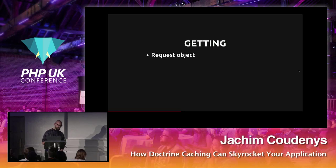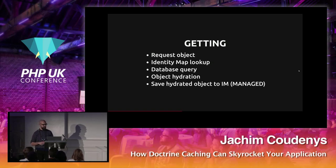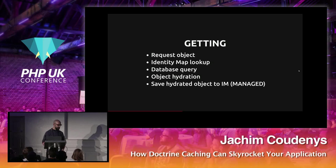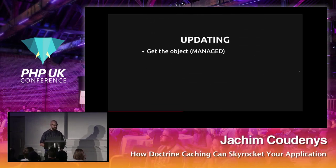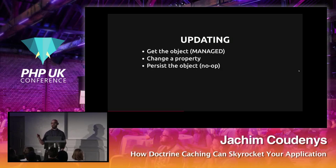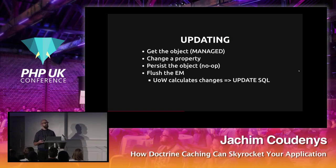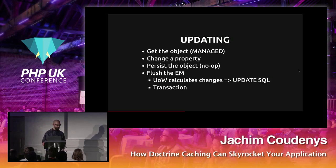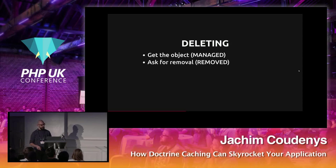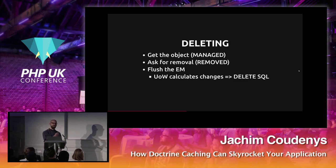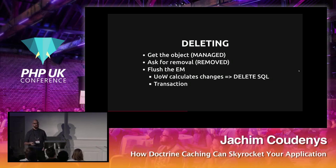When we get an object: first look in the identity map, do a database query, hydrate the object, save it into the identity map. When we update: get it, change the property, persist it to the entity manager — since it's already managed, Doctrine doesn't duplicate it — then flush. It sees it's an existing entity, creates update statements, and performs a transaction. When we delete: request removal, and only on flush does it generate delete SQL. We always have this 'calculate changes' step.